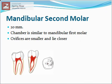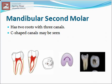Mandibular second molar: the average length is 20 mm. The pulp chamber of this tooth is similar to that of the mandibular first molar except it is smaller. Root canal orifices are smaller and lie closer together. The mandibular second molar has two roots with three canals, but variations may also occur. A C-shaped canal may also be seen in the mandibular second molar, where the mesial and distal canals become fused together into a C-shaped canal, as shown in the attached pictures.